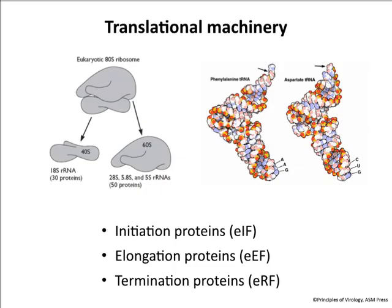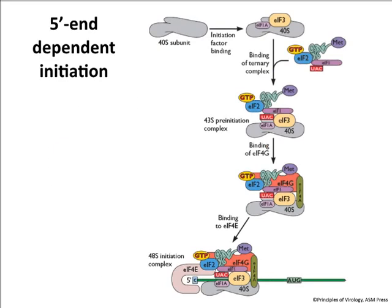There are also tRNA synthetases that put the amino acids on the tRNAs. And then there are many other proteins needed: initiation proteins in eukaryotes called EIFs — eukaryotic initiation factors — elongation proteins, and termination proteins. They were called factors because we didn't know what they were, but we know now they're proteins. I prefer to call these initiation proteins rather than factors, which I find too vague.